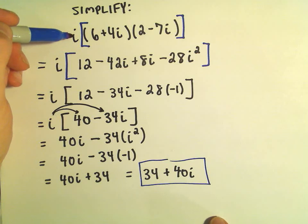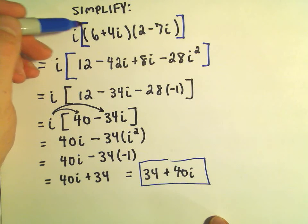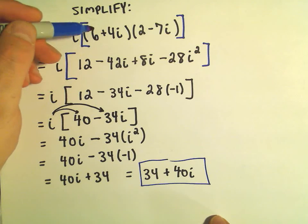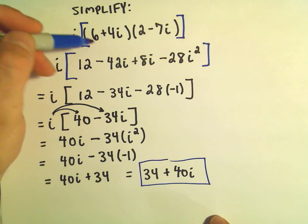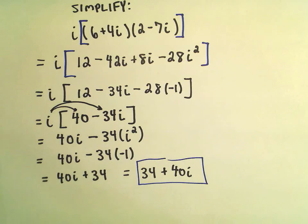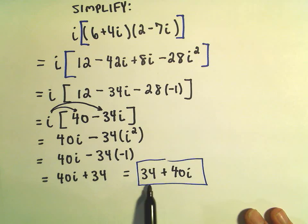You could have certainly multiplied the i, you know, for example, to the 6 and the 4i and get 6i plus 4i squared, simplify that down, and then distribute all that to the 2 minus 7i, collect everything, and again at the end of the day you'll end up with this expression, this complex number 34 plus 40i.